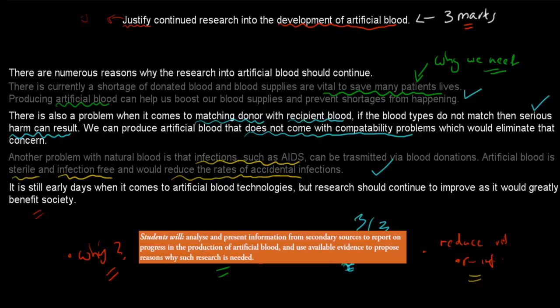So where did this come from? This question, the justified continued research into the development of artificial blood, comes from this dot point. Students will analyze and present information from secondary sources to report on the progress in the production of artificial blood, and use available evidence to propose reasons why such research is needed.